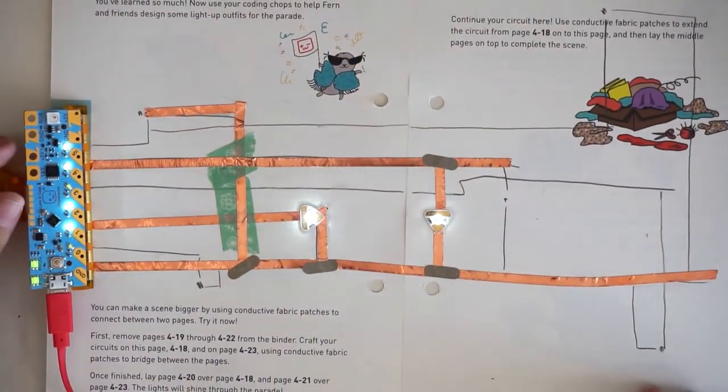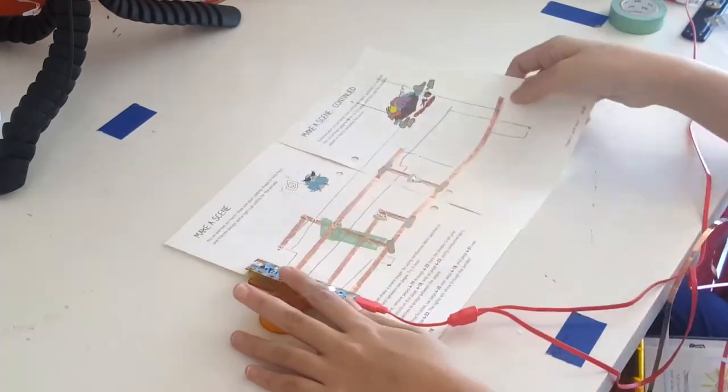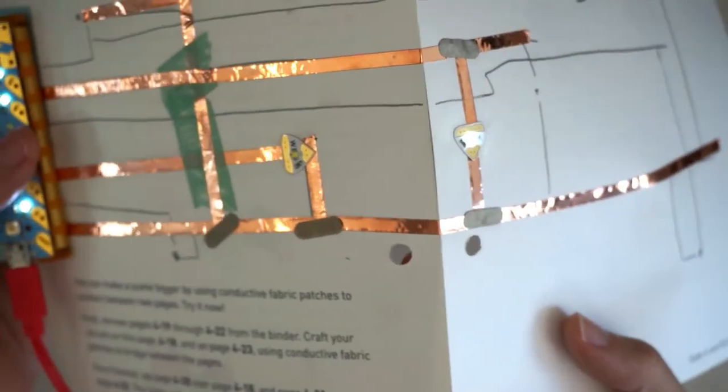Voila! We've got two lights working! Here's another tip. As we fold the pages, the copper tape starts to crease and will eventually crack, causing the circuit to fail.